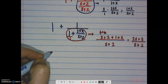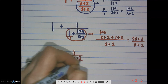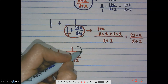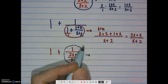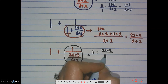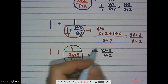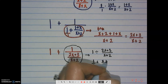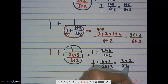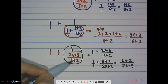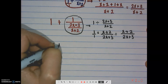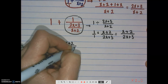Now we have 1 plus 1 over (2x+3)/(x+2). We're getting closer. We deal with this division piece next — you might already be picking up on the pattern. We take 1 divided by (2x+3)/(x+2): keep the 1, which is technically 1 over 1, and multiply by the reciprocal (x+2)/(x+2). Multiplying 1 by anything just gives that same thing, so the fraction simply flips to (x+2)/(2x+3).